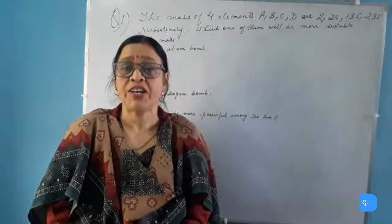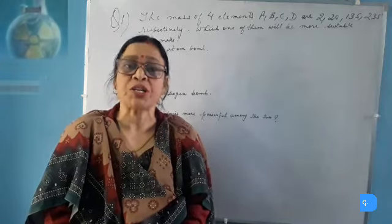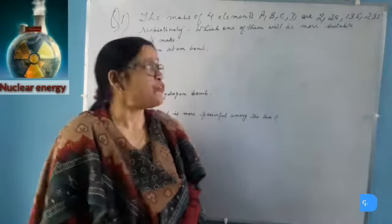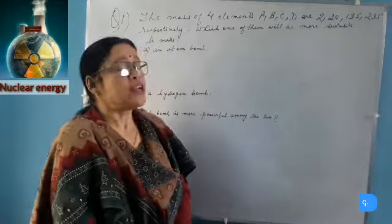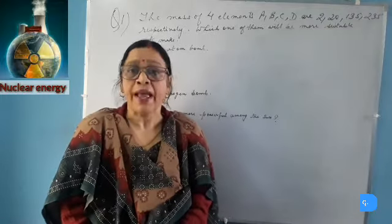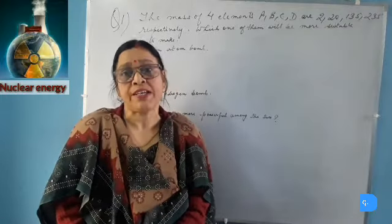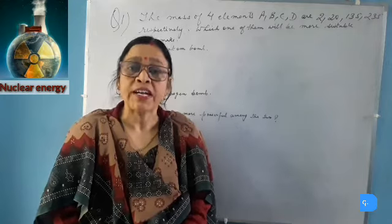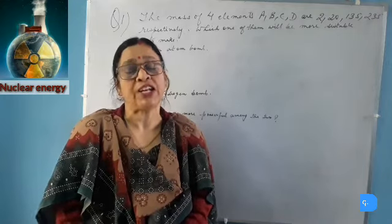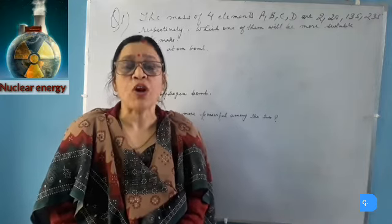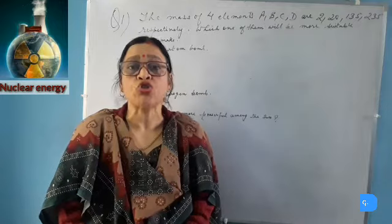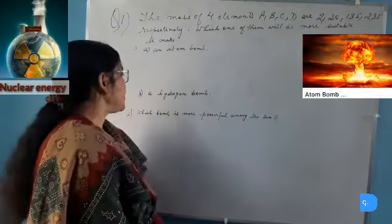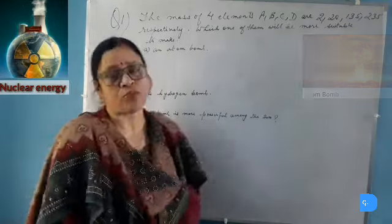Today we will discuss 5 most important questions from Nuclear Energy. The first question is: the mass of 4 elements A, B, C, D are 2, 20, 135, and 235 respectively. Which one of them will be most suitable to make an atom bomb, and which for a hydrogen bomb?